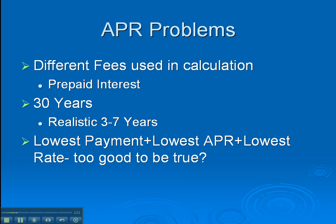That's the idea behind it, but is it true? Well, there are some problems with the APR calculation. One is that different lenders use different fees in the calculation — they don't always use the same set of fees. So you could have identical loans with different APRs just because of the way they calculated it. Also, prepaid interest — the interest you pay from the day you close until the end of the month — if one lender has you closing the last day of the month and one the first day, the first-day close will have more prepaid interest and therefore a higher APR, even though the loan might be identical.